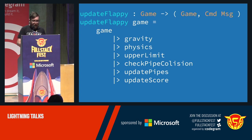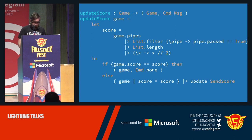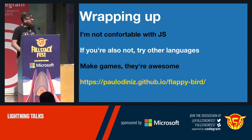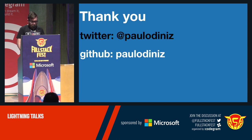This is a function from the game: it grabs the game state, applies gravity, physics, checks the upper limit, checks collision, updates pipes, and updates the score — a very neat pipeline of computations. This is the function that updates the score: it filters all the pipes that were already passed, gets the length of that list, divides by two. If the score is updated, I update it on the server. The server code gets all players, sorts them by score, and takes three. Kind of similar and very nice. I'm not comfortable with JavaScript — if you're not, just try other languages. Make games. This is the URL — you can play it. Thank you, ping me on Twitter.